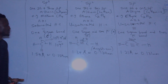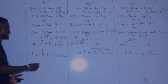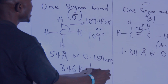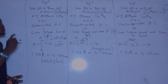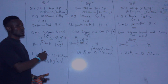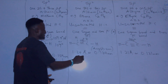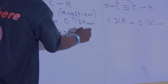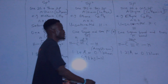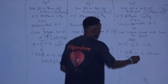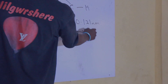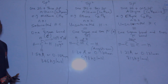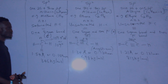We also have the bond energy. The bond energy for sp³ hybridization is 346 kJ/mol. The bond energy for sp² hybridization is 598 kJ/mol. And the bond energy for sp hybridization is 813 kJ/mol. This is the difference between sp³, sp², and sp hybridization.